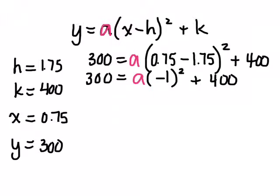What's the next thing we need to do? What's exponents? What's negative 1 times negative 1? Positive 1. So instead of writing a1, I'm going to write 1a. It represents the same thing, right? a times 1. Negative 1 times negative 1 is positive 1. Plus 400.